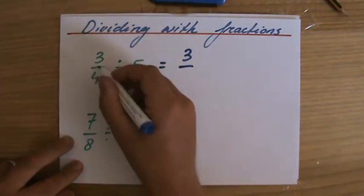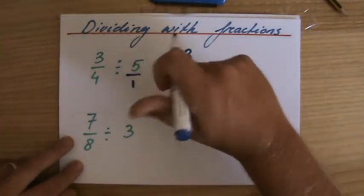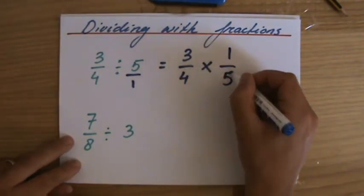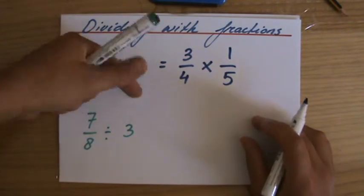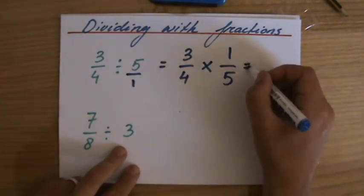So, instead of dividing 3 over 4 by 5, I'll do 3 over 4 times the reciprocal of 5 over 1. So, I'm just turning it around, 1 over 5. I'm turning that divisor around. That 3 over 4 stays 3 over 4. And that equals,